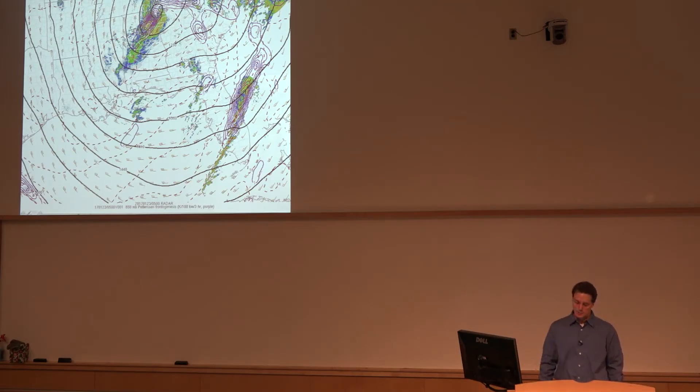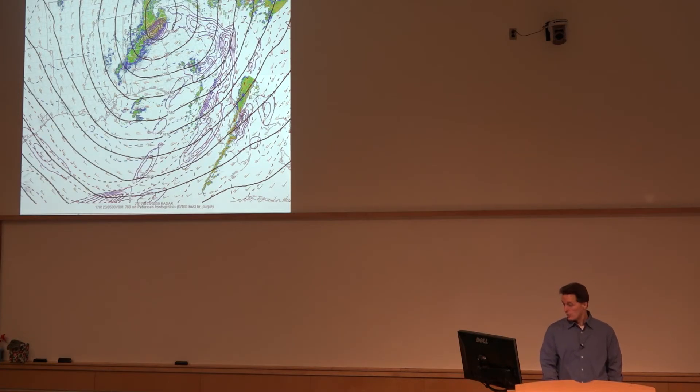Now if you go aloft, 700 millibars, any frontogenetic response and the thermal advection was back to the west. So this slopes up to the west and northwest with height. So mostly what's focusing the convection back down here are low-level mesoscale processes, the front itself.